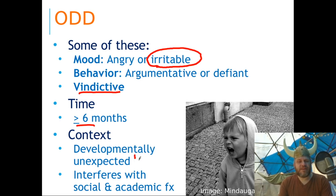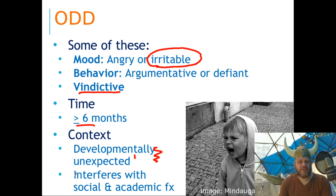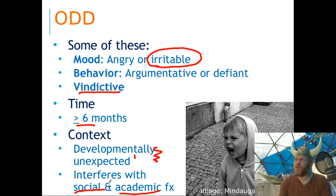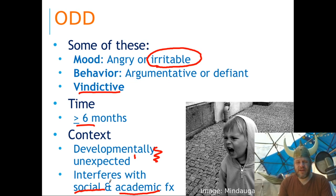It needs to be developmentally unexpected. So if the child has some other developmental disorder that would make this an expected thing, you wouldn't diagnose them with this. And of course, you've got your Lieben and your Arbeiten — your life and your love, your social and your work/academic functioning. That always has to be impaired with all disorders in the DSM.